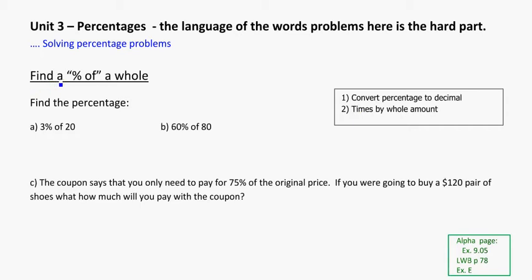Our first problem type is finding a percentage of a whole. The keywords here are 'percentage of' - like 4% of 100 or something like that. You'll be given a percentage and a total or whole amount, like a whole group of students or the original cost of something.